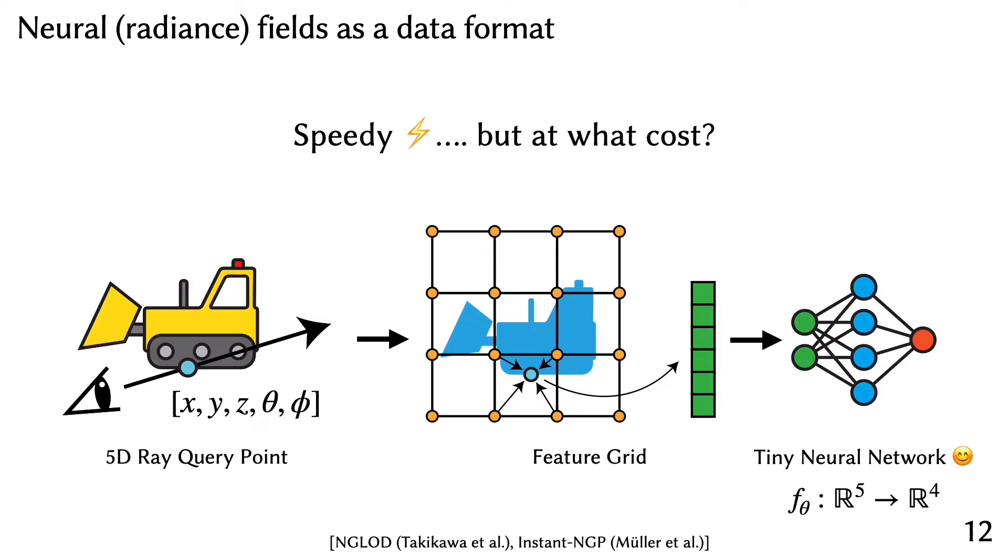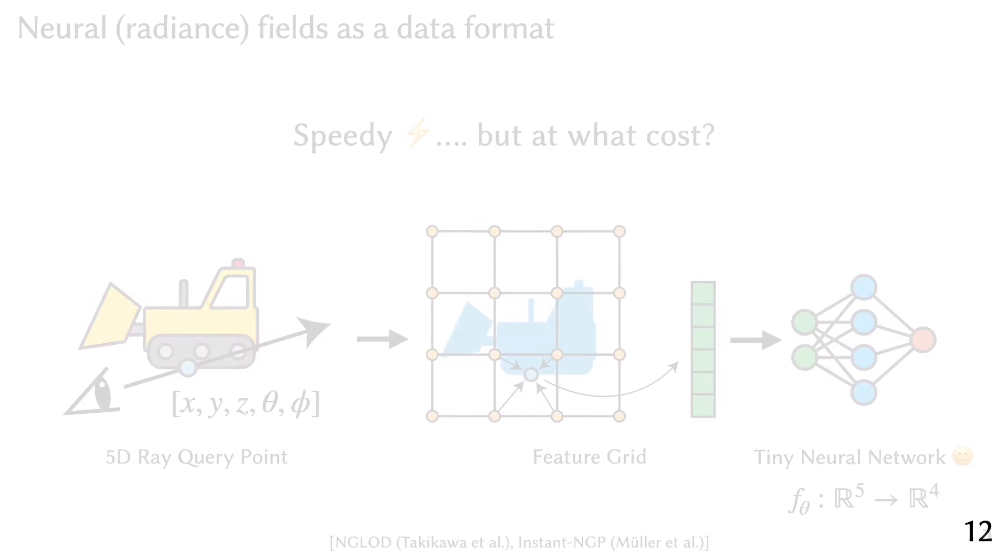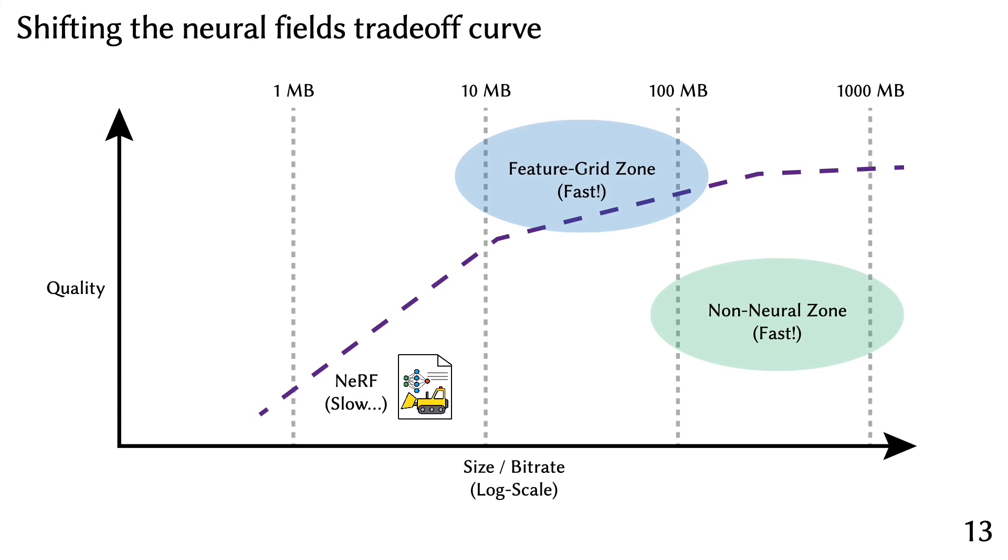But nothing in the world ever comes for free. What are the costs of feature grids? Although feature grids have been shown to be fast and enable high-quality reconstructions, they use an order of magnitude more memory than global methods which rely on a single neural network. So how do we fundamentally shift this trade-off curve between size and quality?